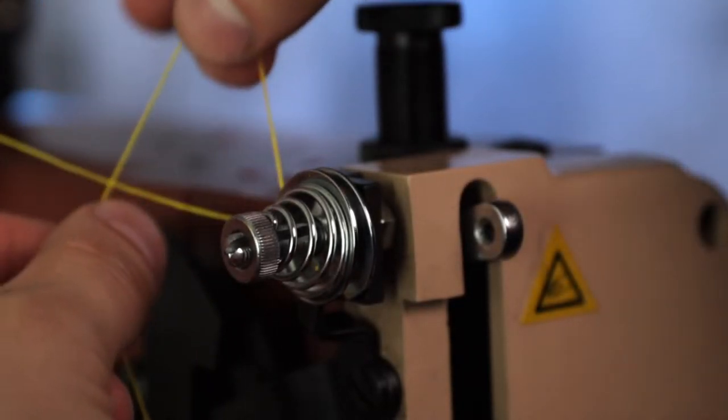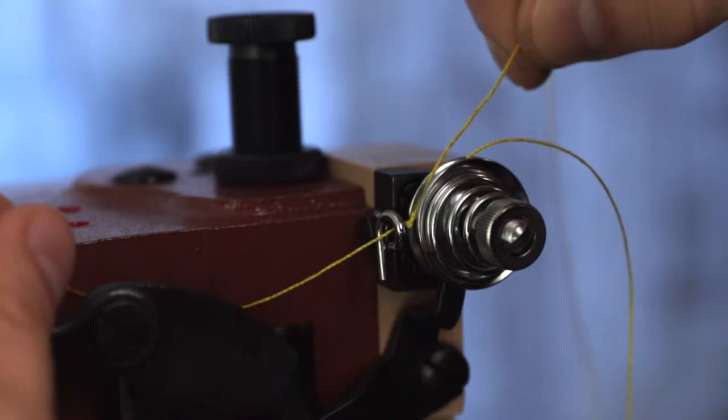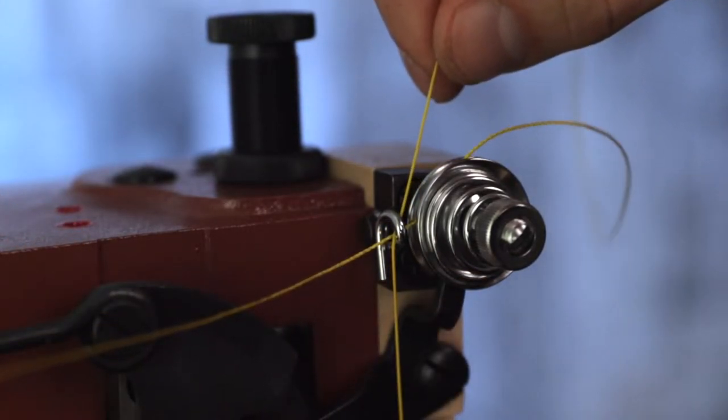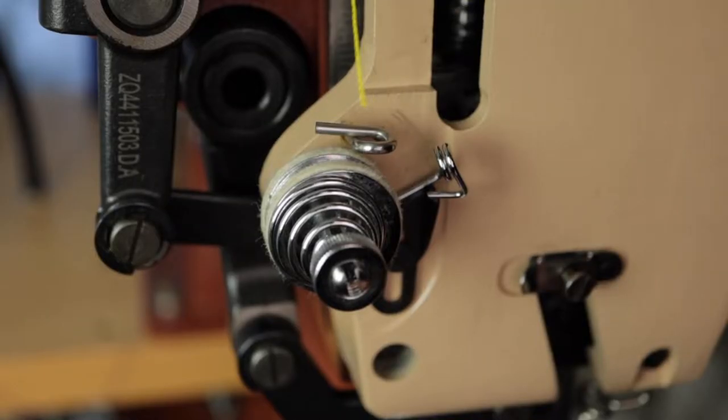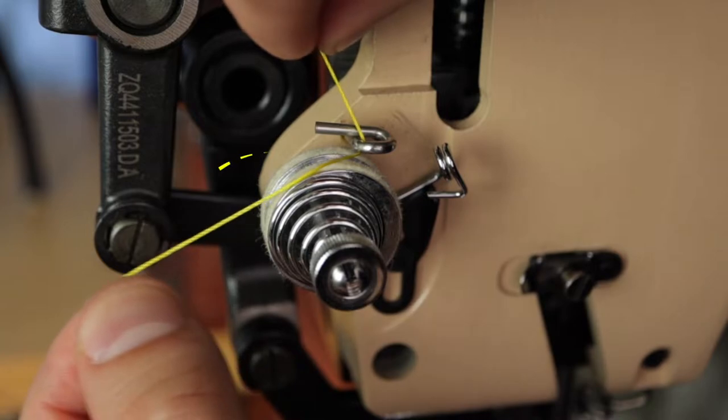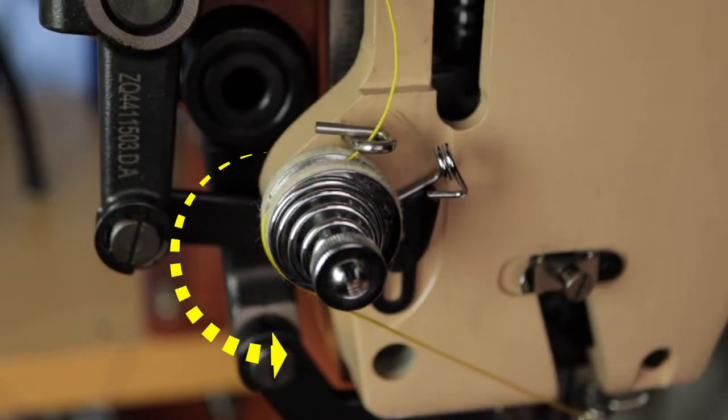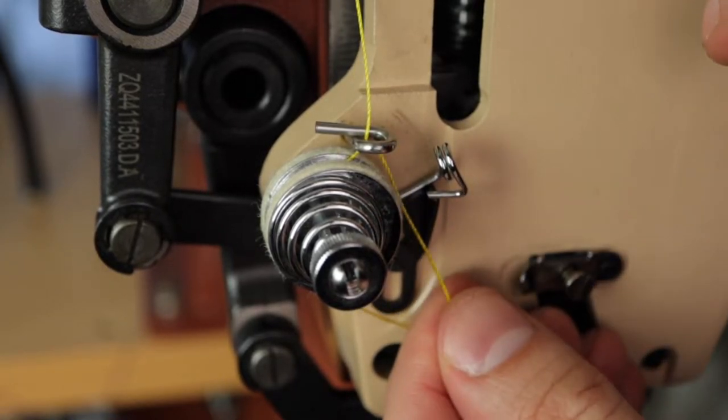Then bring the thread around and back through the thread guide. Down the machine there is a second thread guide. Pass through this guide, and then you want to go two revolutions counterclockwise around the tension discs and then back up through the thread guide.